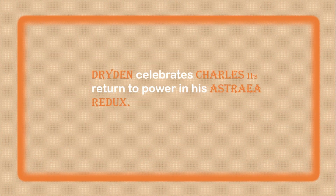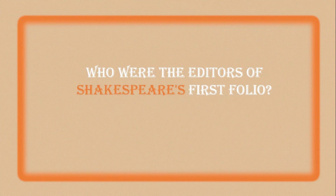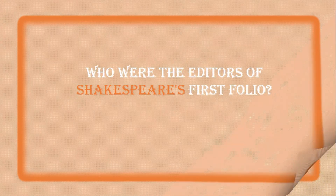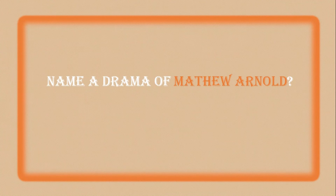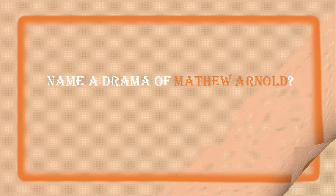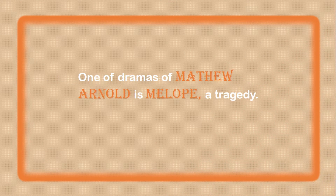Dryden celebrates Charles II's return to power in his Astraea Redux. Question 4: Who were the editors of Shakespeare's First Folio? The editors of Shakespeare's First Folio are Heminge and Condell.